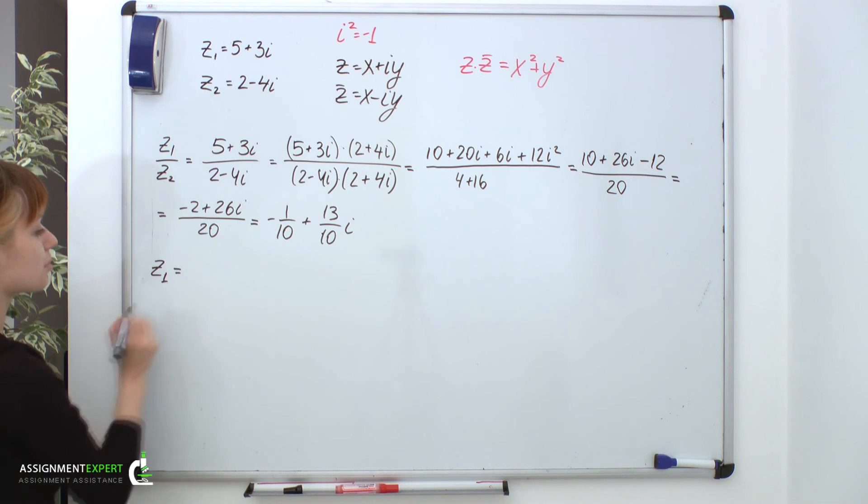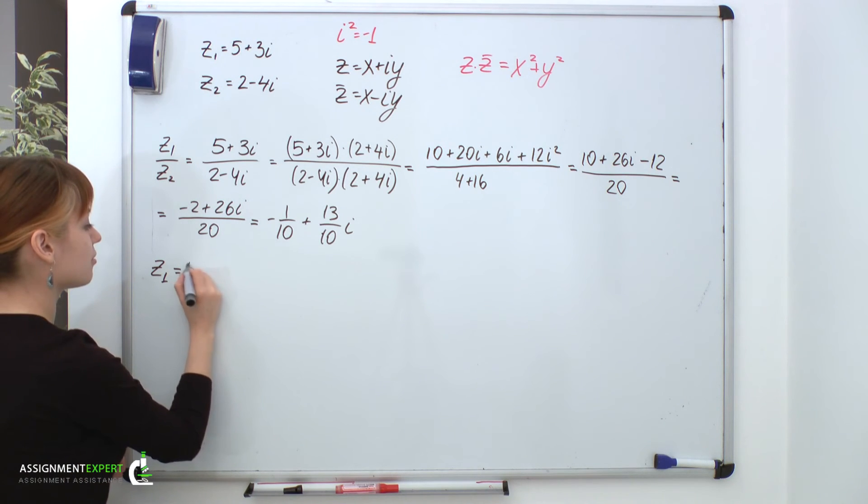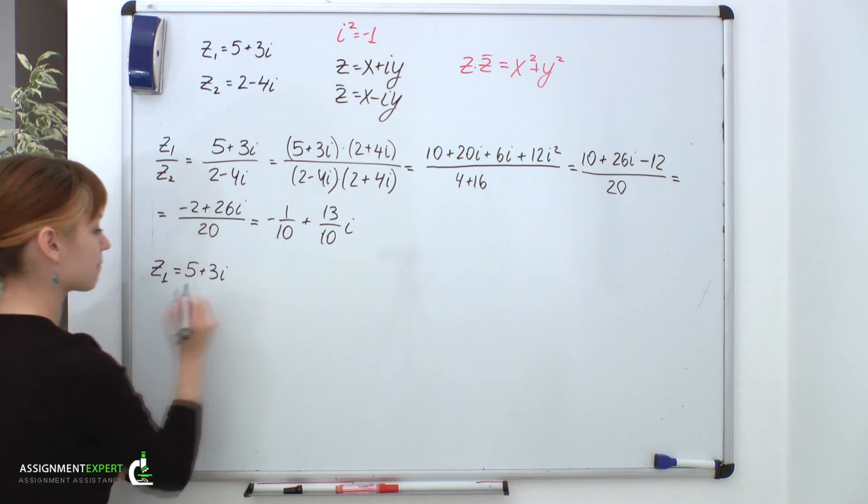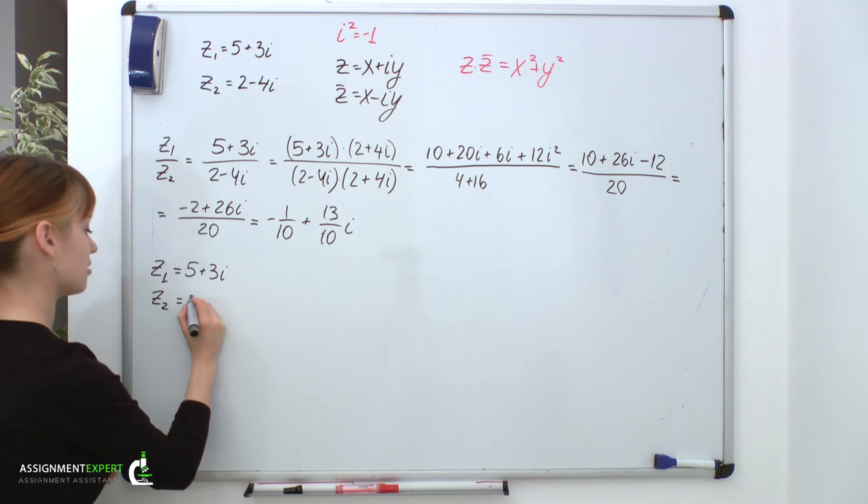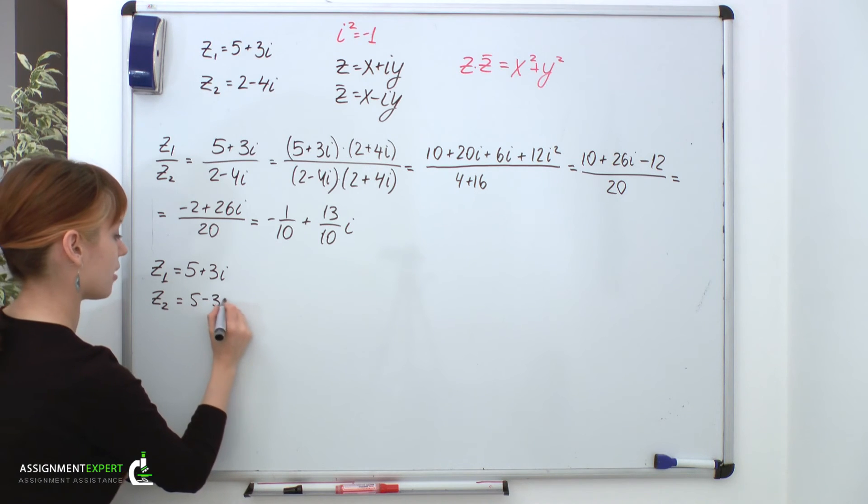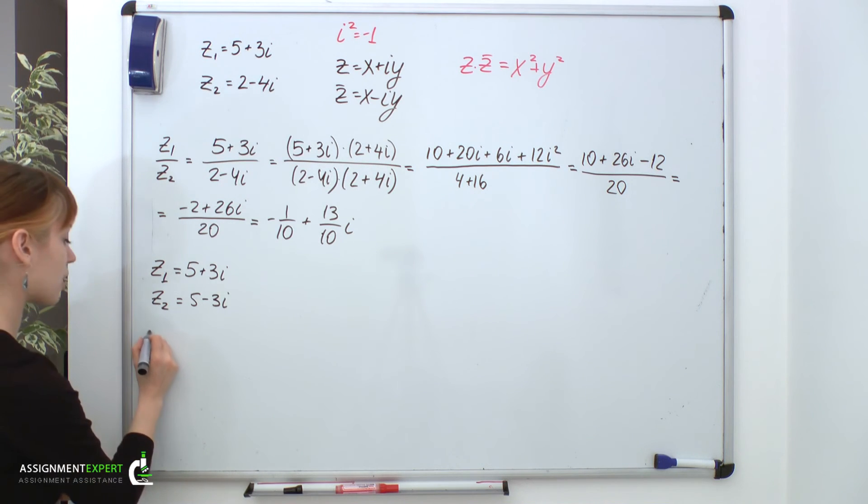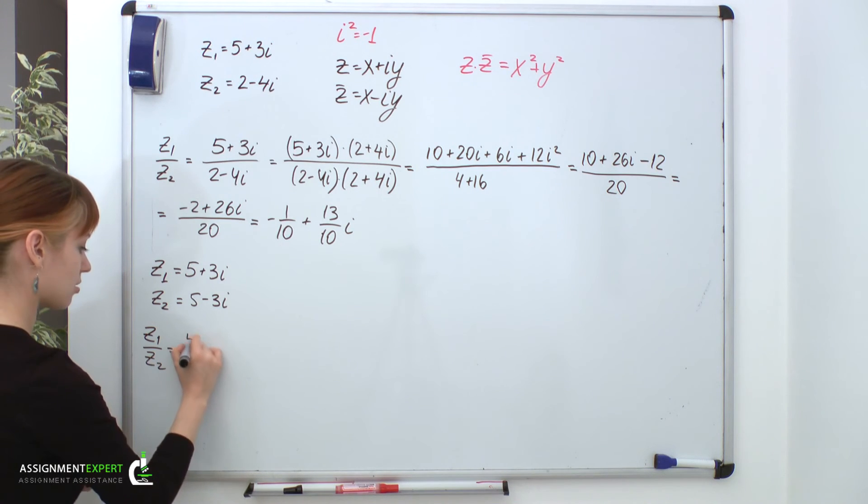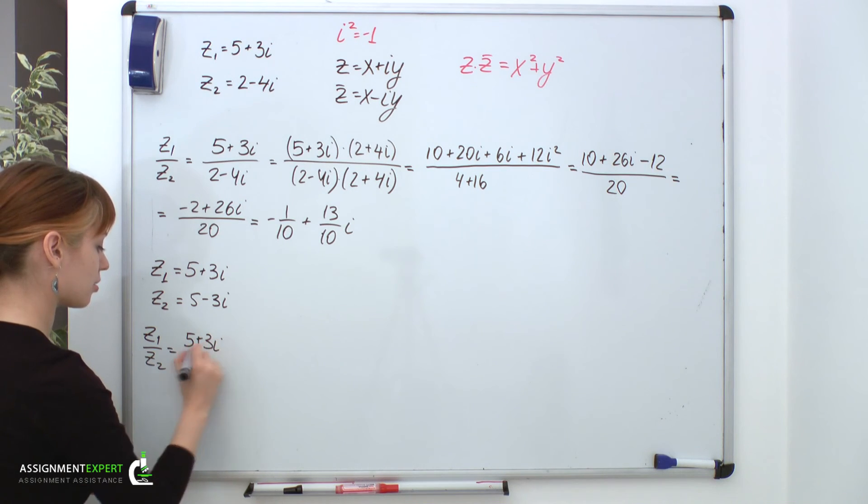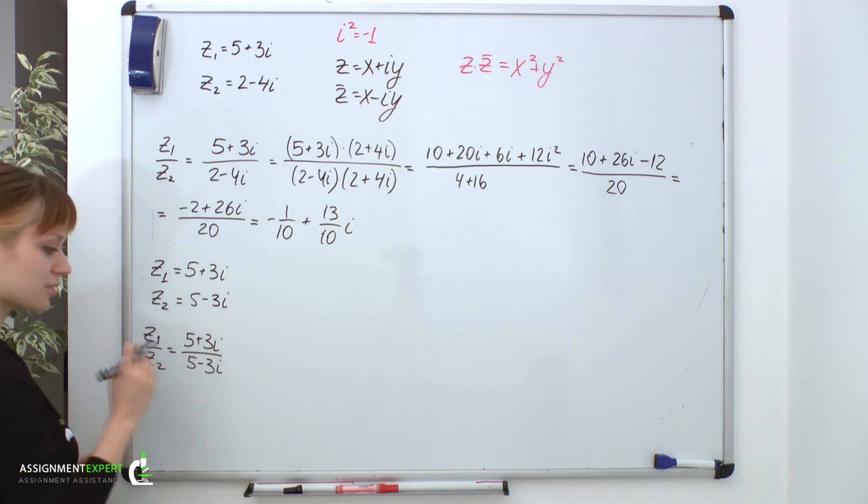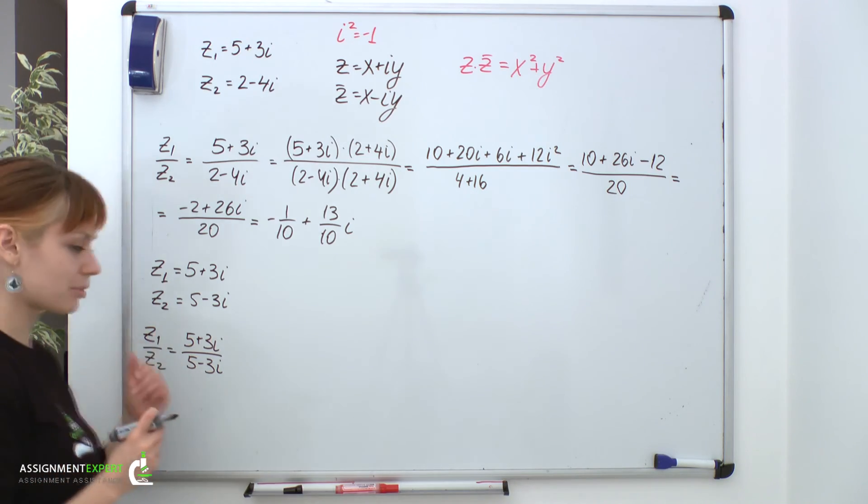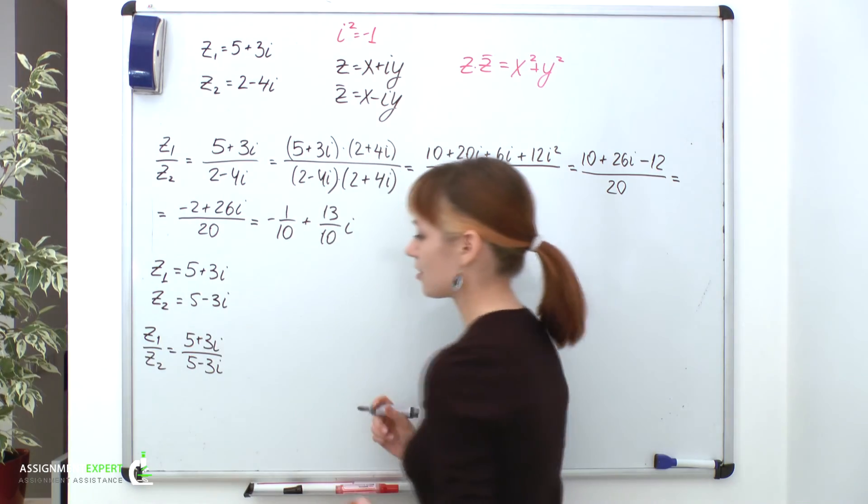So, suppose z1 remains the same: 5 plus 3i. But z2 will be equal to its complex conjugate: 5 minus 3i. So, we form our fraction. z1 over z2 equals 5 plus 3i over 5 minus 3i. Then, we multiply the top and the bottom of this fraction by the bottom's complex conjugate, which is basically an expression we have in the top.